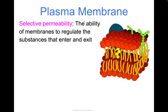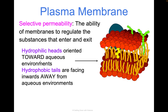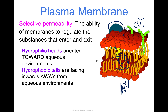Selective permeability is the ability of membranes to regulate substances that come in and out of the cell. The hydrophilic heads are oriented towards the aqueous environments on the outside and inside the cell, while the hydrophobic tails face inwards, away from these aqueous environments. This allows the cell to regulate what comes in and out, because substances have to pass through this hydrophobic environment to get into the cell freely. Otherwise, they're going to need one of these membrane proteins — we'll get into that.